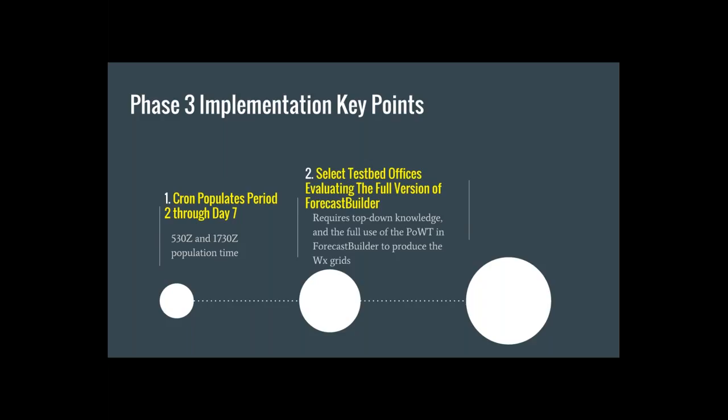The testbed offices, which extend from Springfield up into the Great Lakes, will evaluate the full version of Forecast Builder. The full version requires some top-down knowledge, as the top-down step is part of the full version, and full use of the POUP methodology in Forecast Builder with the backbone to produce weather grids. Very importantly, all sites are going to produce ice and snow amounts through Forecast Builder, working with foundation grids — collaborating on snow ratio, temperature, and QPF — to get snow amount and ice accumulation to what you think it should be for the event.